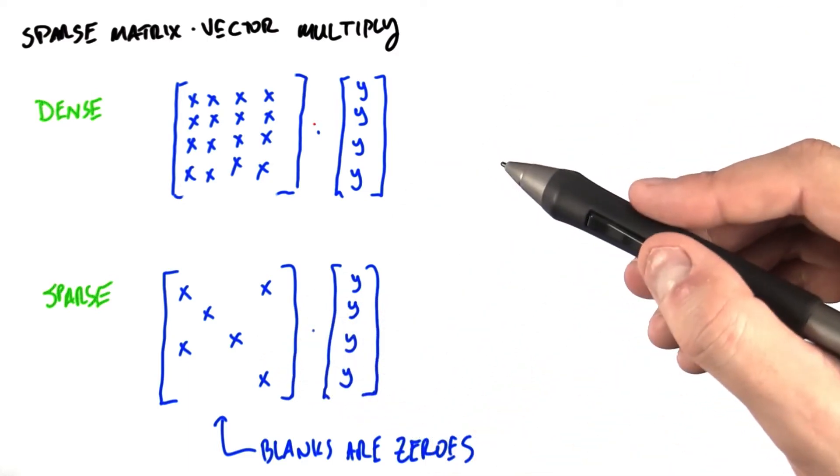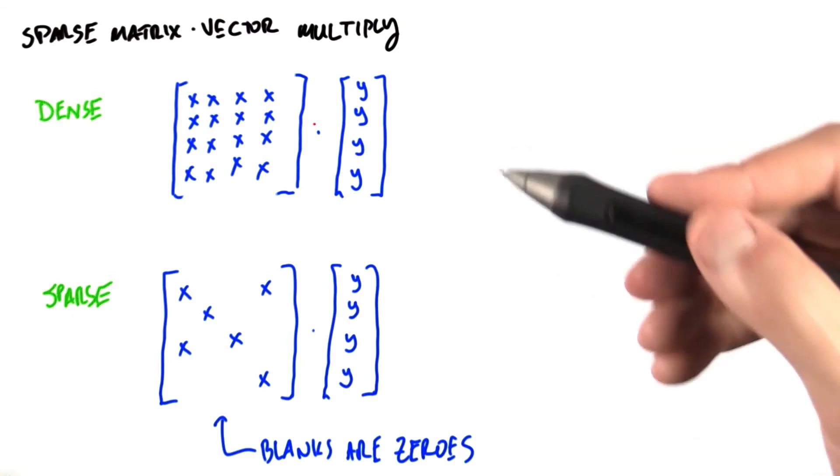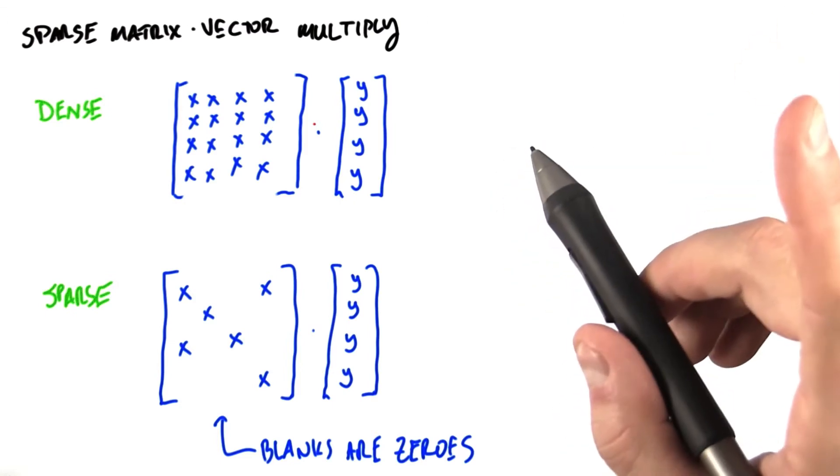Many, if not most, of the entries in these matrices are 0. So we prefer to represent only the non-zeros in this matrix, which gives us two advantages.